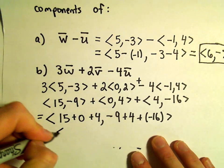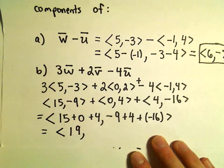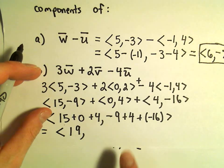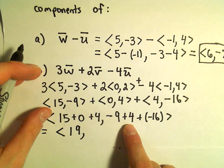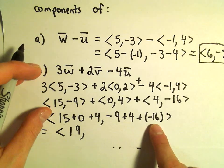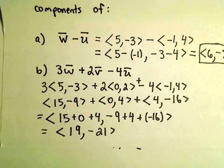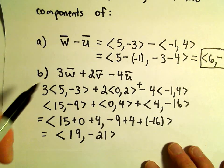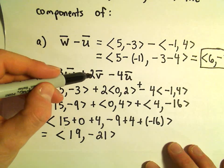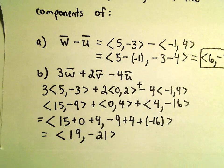And let's see. I think we can clean this up without too much trouble. 15 plus 4 is going to give us 19. Negative 9 plus 4 will be negative 5. Negative 5 plus negative 16 will be negative 21. And now we have the components of this new vector, 3W plus 2V minus 4U.